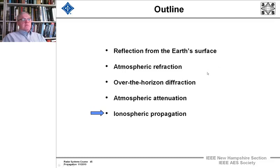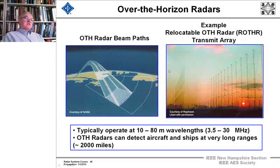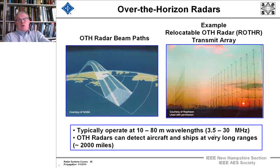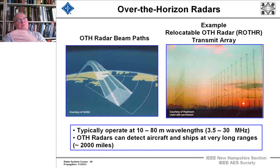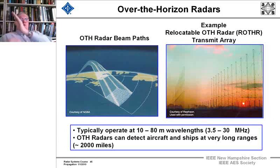Now on to ionospheric propagation, which is really a very different kind of beast. You can actually build radars that will see targets at ranges of 2,000 miles or greater. In my youth as an amateur radio operator, I've communicated halfway around the world — literally within a couple of hundred miles to an island in the Antarctic — with an antenna that was omnidirectional in azimuth and had very little gain, maybe 3 or 4 dB gain in elevation, and just 100 watts.